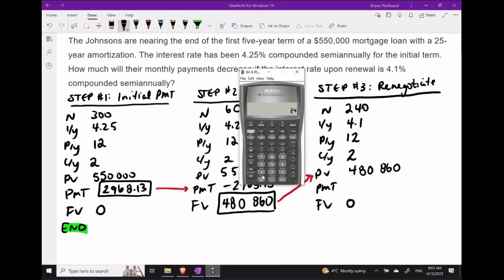So let's go ahead and start programming in some of the values we need here with 240 in for N. We need to update our interest rate to 4.1. I'm just going to slide into the submenu, make sure that everything looks good in there. And it does. We have an updated present value of 480,860. I'm going to zero out the payments here. We're actually going to ask the calculator to compute the payments in a second. Let's go ahead and program in zero for the FV and then we should be able to compute our new payment size.